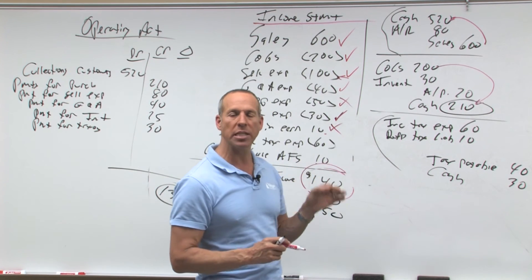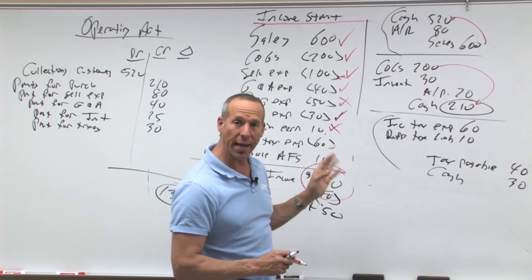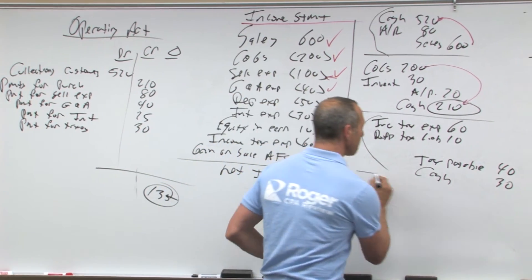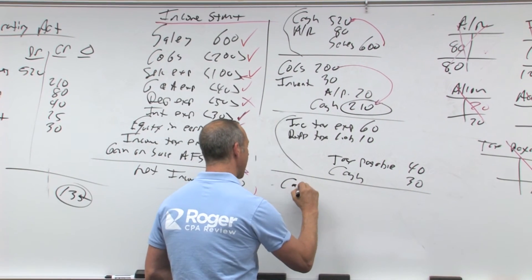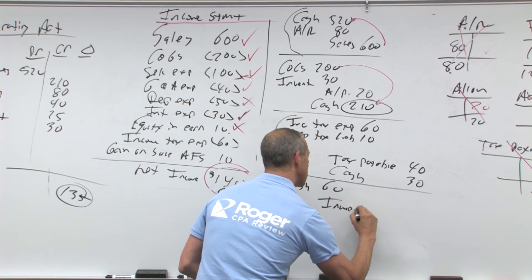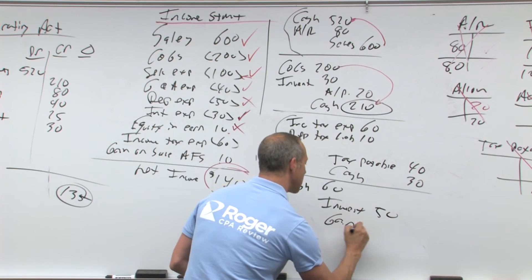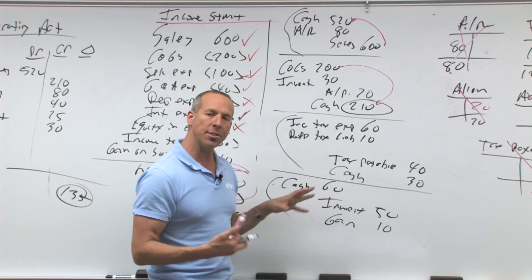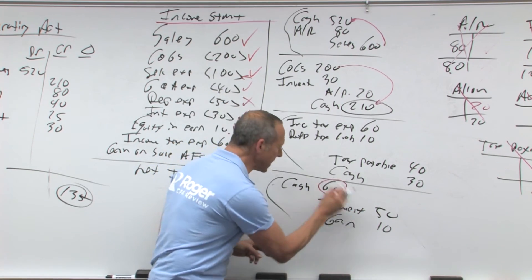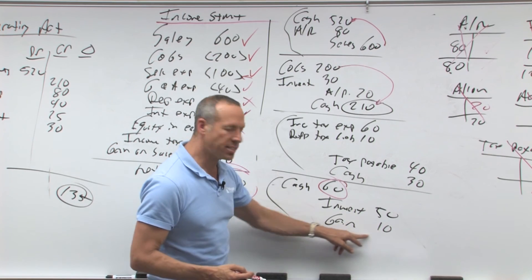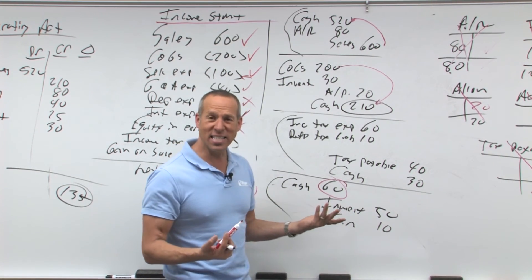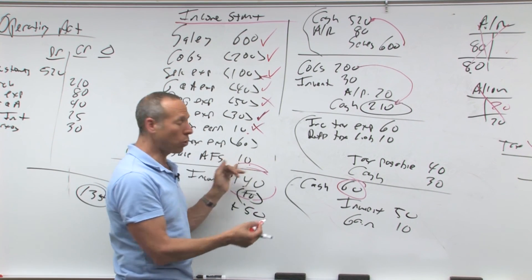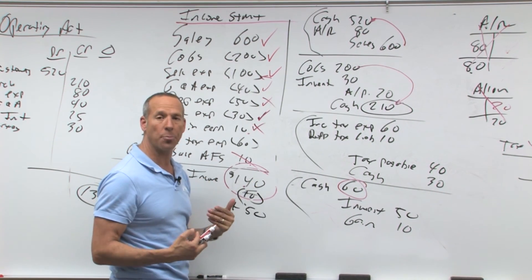Therefore, this $10 is not an operating gain, it should be an investing gain. It's really shown along with the investment. For example, let's say we sold an investment, I got cash of 60, the investment was in my books for 50, and I have a gain of 10. What kind of activity is this? Sale of investment. How much should go on my statement of cash flows? The 60. Where does it go? Investing. So this 10 is a gain, but it's not really an operating gain. So what do I do? Ignore it, because it's not operating, it's investing.